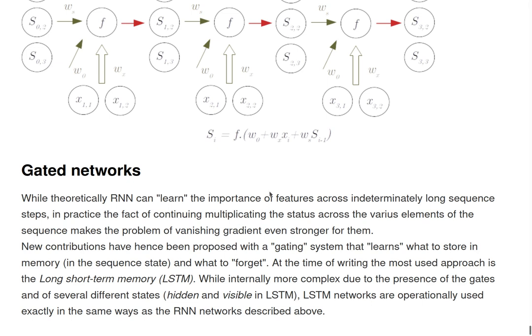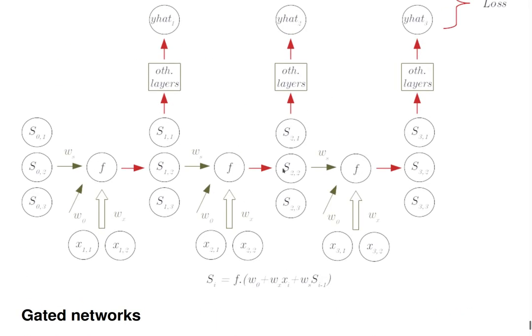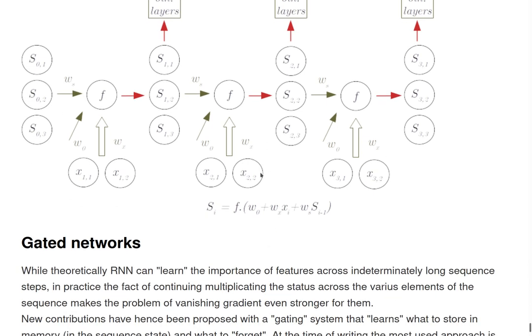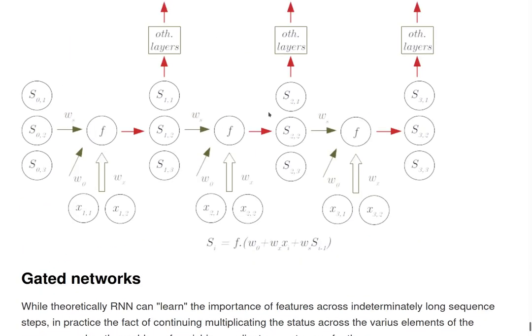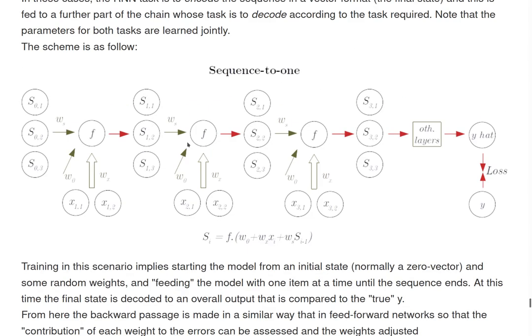And in particular one kind of gated network that is in use at time of speaking are the long short-term memory, but they are more complex because they have several gates. They have also several states for LSTM, hidden and visible states in particular. But we don't need to worry much about them because at the end the way they are used in operations is exactly the same way that we described here.